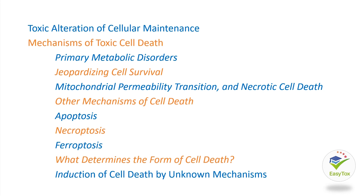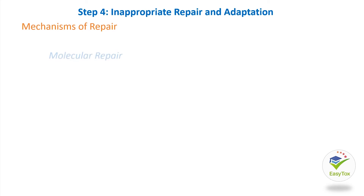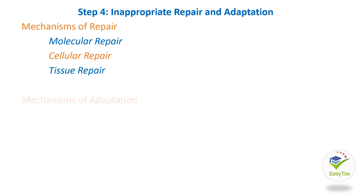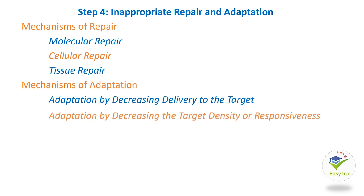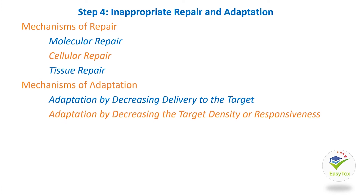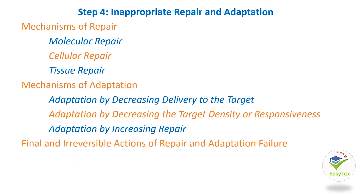Step 4: Inappropriate Repair and Adaptation. Mechanisms of Repair, with subsections: Molecular Repair, Cellular Repair, and Tissue Repair. Mechanisms of Adaptation, with subsections: Adaptation by Decreasing Delivery to the Target, Adaptation by Decreasing the Target Density or Responsiveness, Adaptation by Increasing Repair. Final and Irreversible Actions of Repair and Adaptation Failure, with subsections: When Repair Fails and When Adaptation Fails.